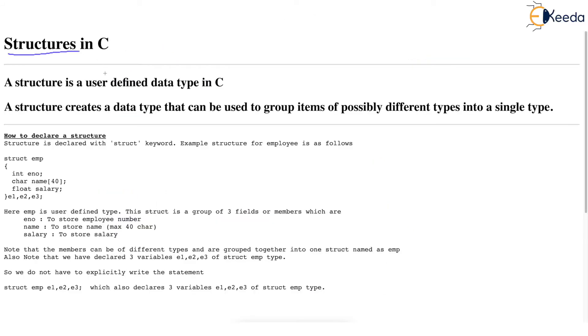Just in the previous video, we saw how to declare EMP structure. EMP structure was declared by writing struct keyword and then the name of the structure. And then we declared members as int eno for employee number, the name,